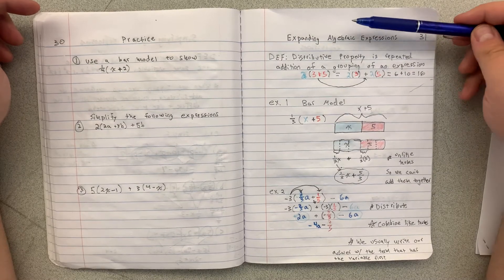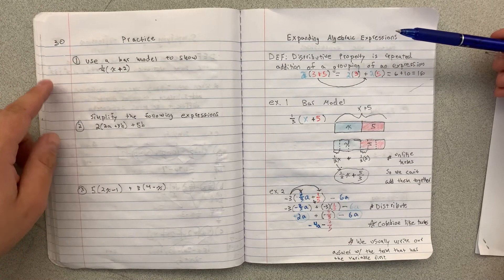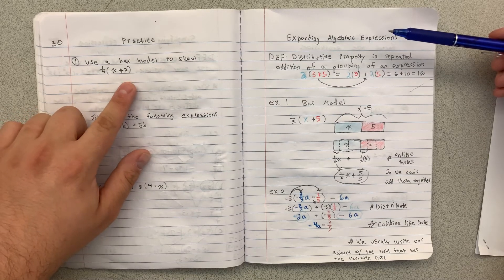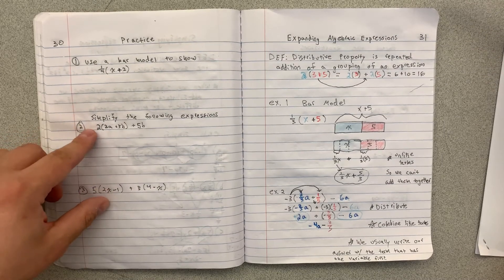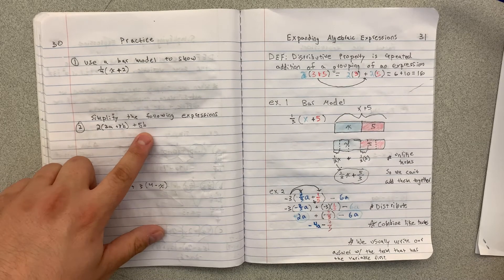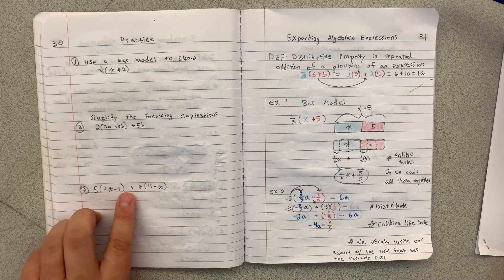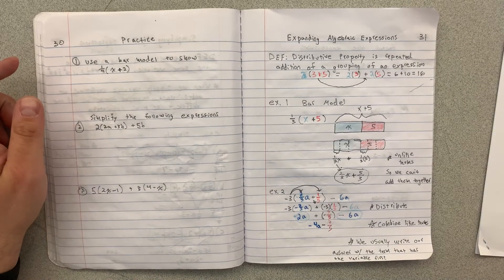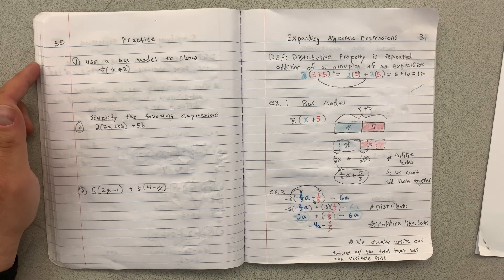So now that you've learned or taken the notes on expanding algebraic expressions, you're going to do these three problems on the left side of your book. The first one, I want you to use a bar model to show 1 fourth times x plus 2. And then 2 and 3 you're just going to simplify in the more traditional method. 2 times the quantity 2 a plus 3 b and then plus 5 b. And then 5 times the quantity 2 x minus 1 plus 3 times the quantity 4 minus x. And when you finish those three problems, show your teacher. And then you can move on to the practice problems in the textbook.